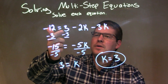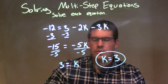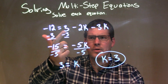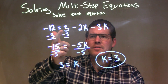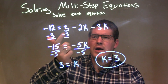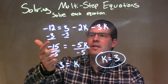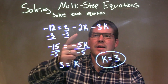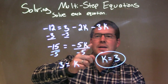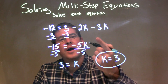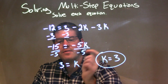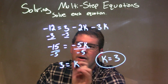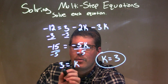Let's recap. We were given negative 12 equals 3 minus 2k minus 3k. I brought the number from the right-hand side over — it was a positive 3, so I subtracted 3 from both sides. That gave me negative 12 minus 3, which is negative 15. I then combined negative 2k and negative 3k to get negative 5k, and then divided by negative 5 on both sides because it's the opposite of multiplication. That left k by itself on the right, and negative 15 divided by negative 5 is positive 3 on the left.